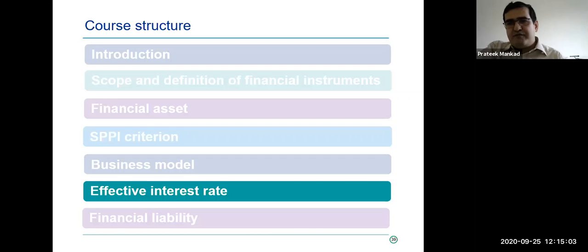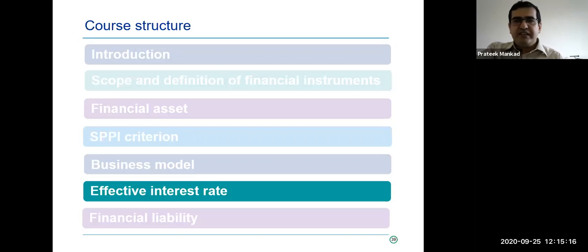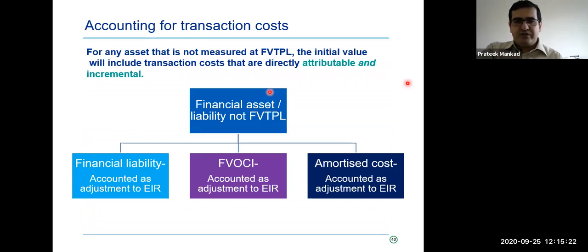But if you are a bank with a portfolio of say 10 lakhs or 20 lakhs of such loans, it becomes very cumbersome operationally. And therefore this concept of EIR is very critical. In simplistic terms, EIR is nothing else but the IRR of a loan — or yield of the loan — taking into account all the origination fees and costs.